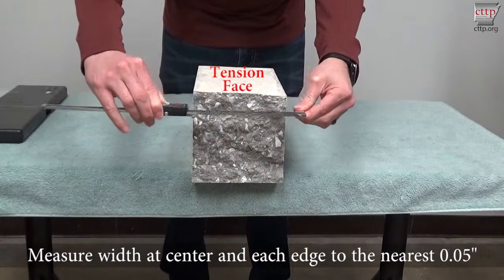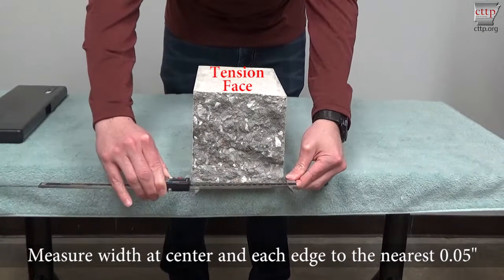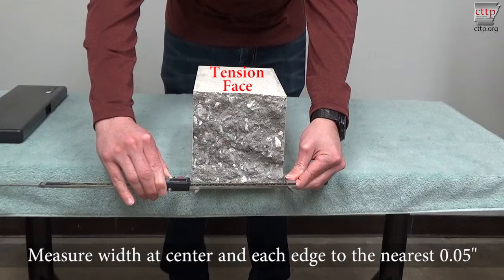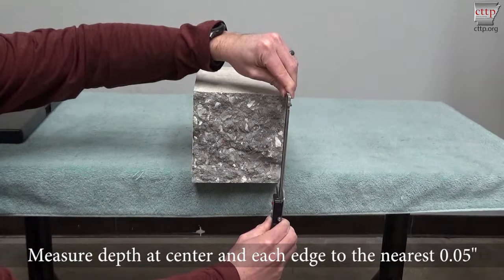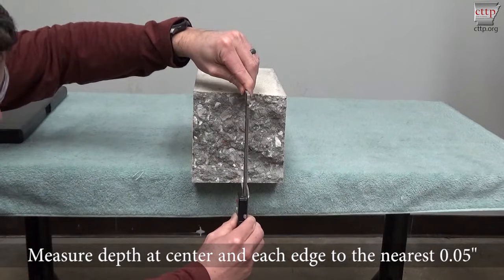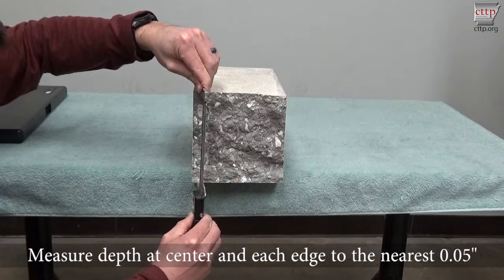Record three width measurements by taking a measurement on each edge and one in the middle as shown. Record each reading to the nearest 0.05 inches.